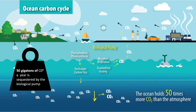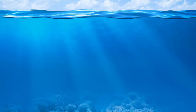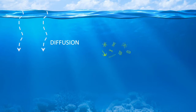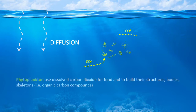The basic process starts with diffusion, where carbon dioxide in the atmosphere is absorbed by the ocean and dissolves in the surface ocean. We then have microscopic organisms in the surface of the ocean known as phytoplankton. They use this dissolved CO2 for food and to build their structures, including their skeletons, turning the dissolved carbon dioxide into organic carbon compounds which form their bodies and structure.